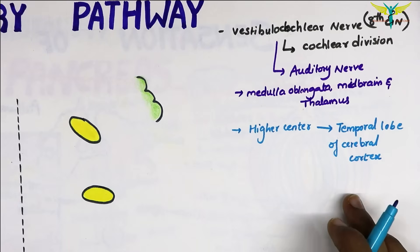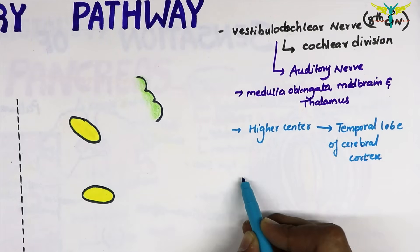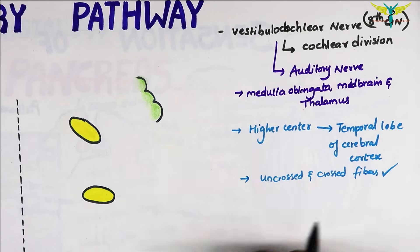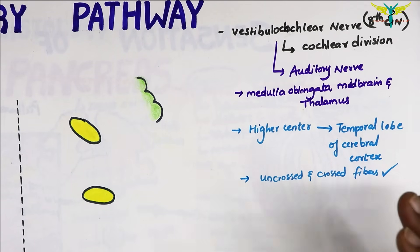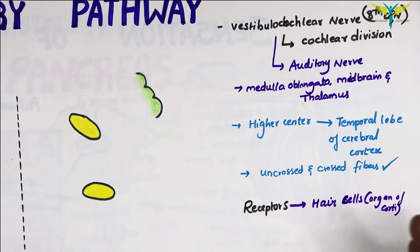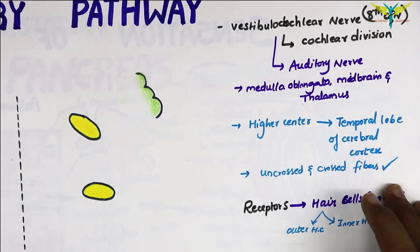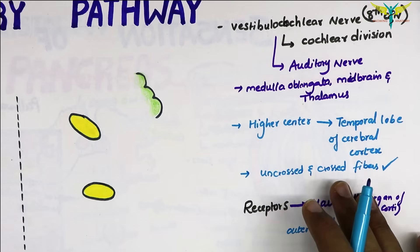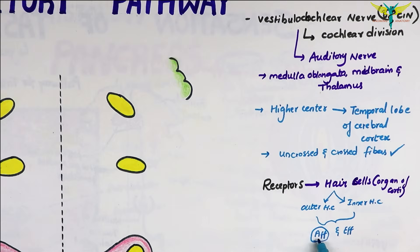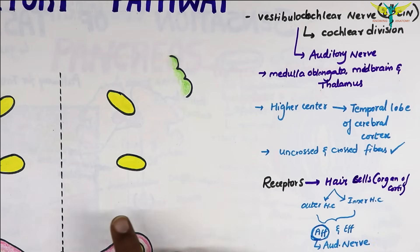The higher center for hearing is present in the temporal lobe of the cerebral cortex, and the fibers are both uncrossed and crossed. The receptors for the auditory pathway are the hair cells present in the organ of Corti. The hair cells are of two types: the outer hair cell and the inner hair cell. All the hair cells are innervated by afferent and efferent nerve fibers, and the afferent nerve fibers from the hair cells form the auditory nerve.